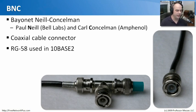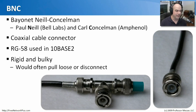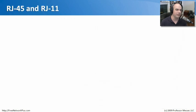For 10Base2, which was an Ethernet topology, we used RG58 coax cables with BNC connectors. You'll see BNC connections very commonly on those older-style Ethernets. Unfortunately, they were rigid and bulky. While they were fine for their original purpose, they would often pull loose or disconnect. For very widespread use across hundreds or thousands of devices, this became very difficult — because a loose connection could bring down the entire network. So we had to come up with other types of connectors.